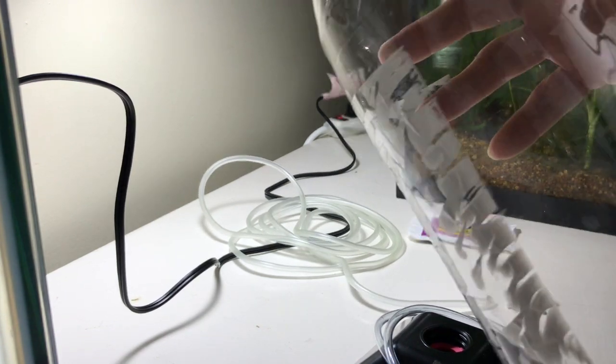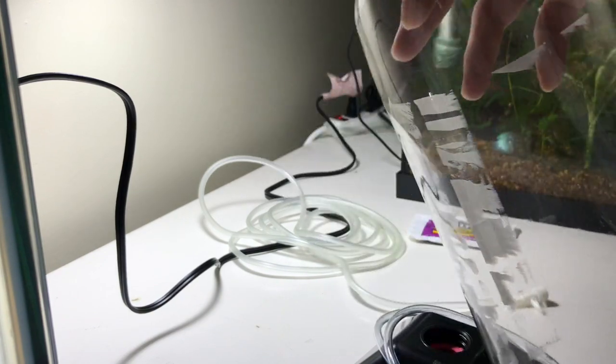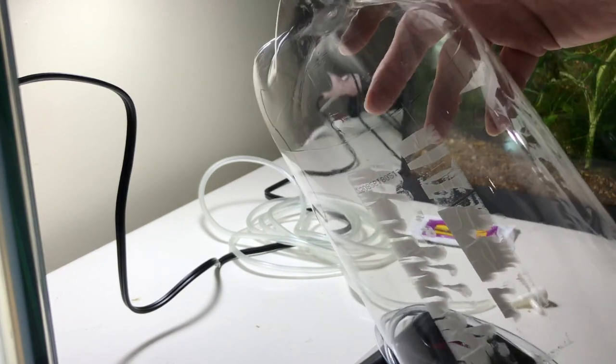I'm going to use the pump that I use here for this 20-gallon tank. It has two outlets, and I'm going to split it out and use that for the brine shrimp hatchery.